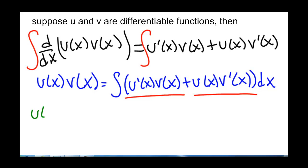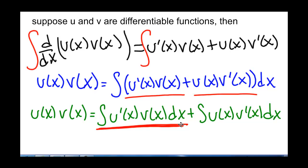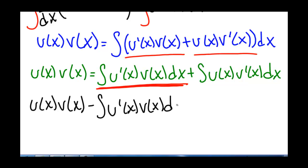So we have u(x) times v(x) equals the integral of u'(x) v(x) dx plus the integral of u(x) times v'(x) dx. Now we can move some things around — we're going to subtract the integral of u'(x) v(x) dx from both sides. So we get u(x) v(x) minus the integral of u'(x) v(x) dx equals the integral of u(x) v'(x) dx.